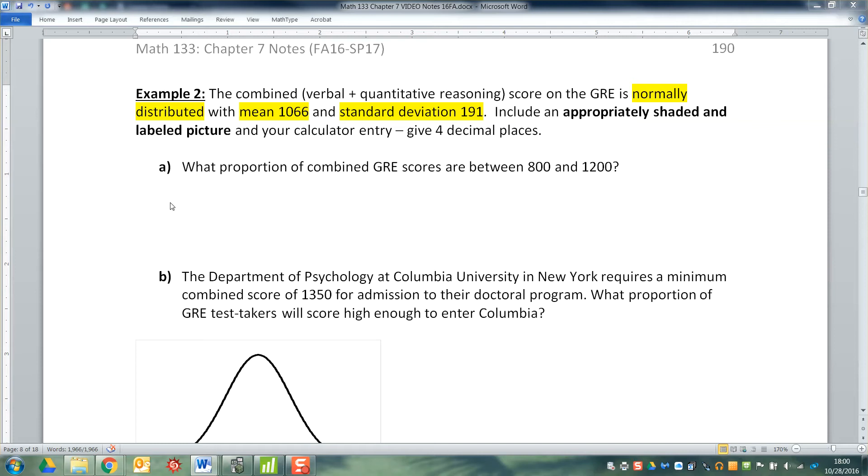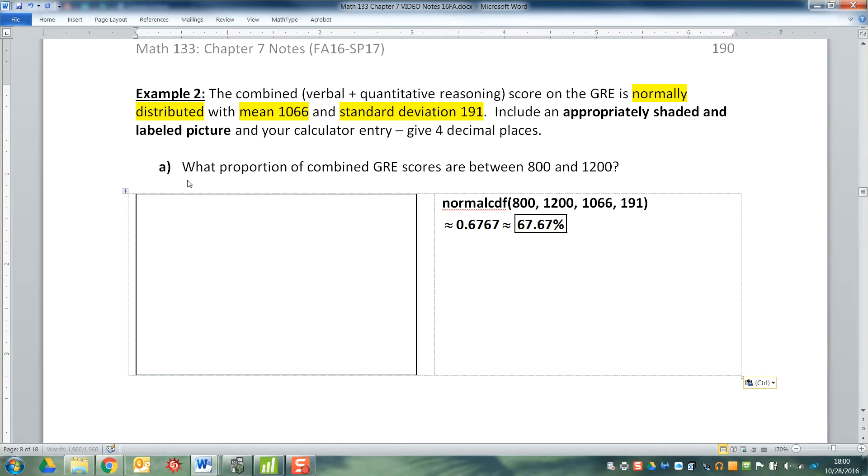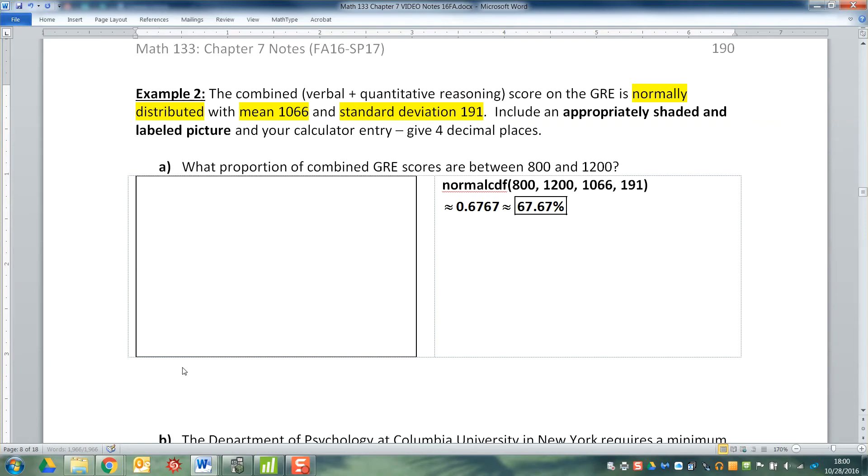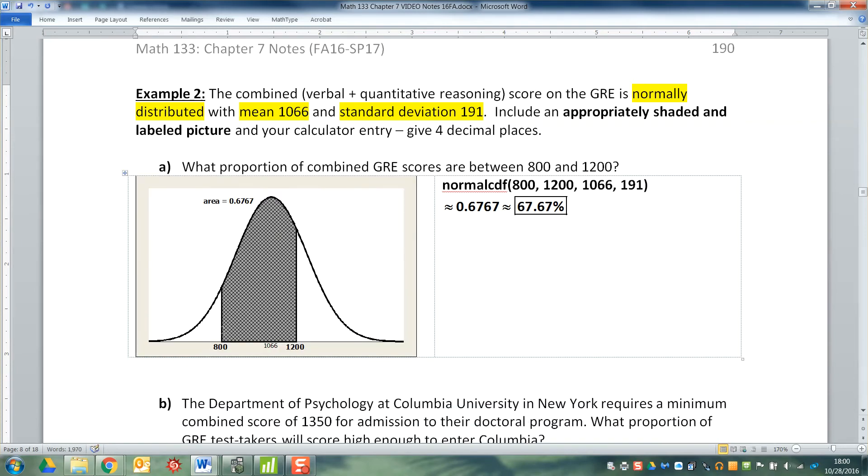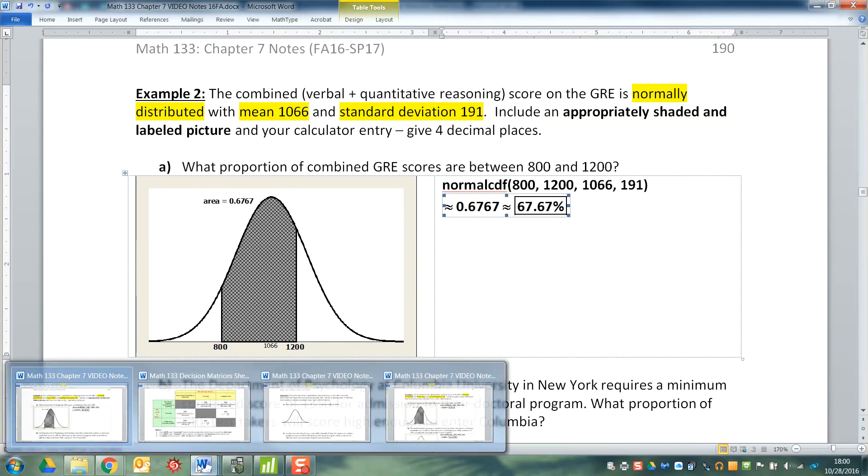800 is a little bit more than one standard deviation away. 1200 is less than a full standard deviation away, so you're going to have the 800 be farther over to the left than the 1200 is over to the right. So it should look like this. This is the graph. Now you can see I've already done this problem, but that's all right, we'll do it again. So let me show you why it works this way.